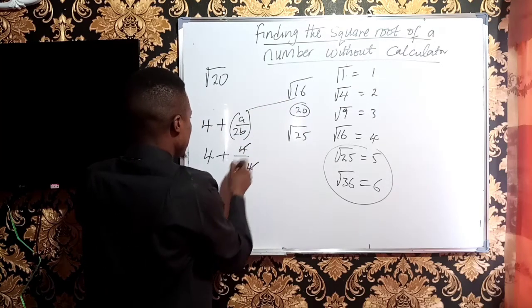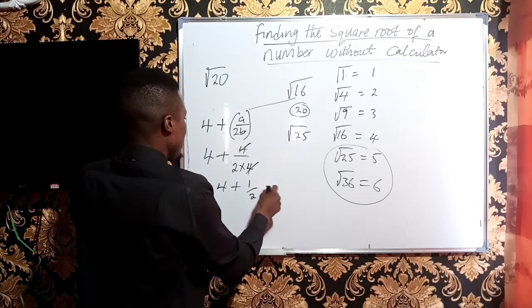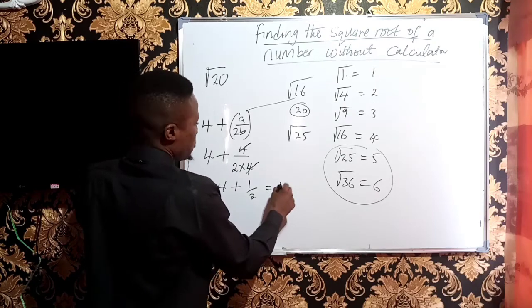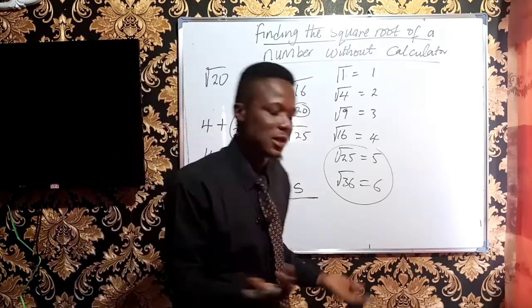This will cancel out. I have 4 plus 1 over 2. And 1 over 2 is 0.5, so it is 4 plus 0.5, which is approximately 4.5. Let's take it 4.5.